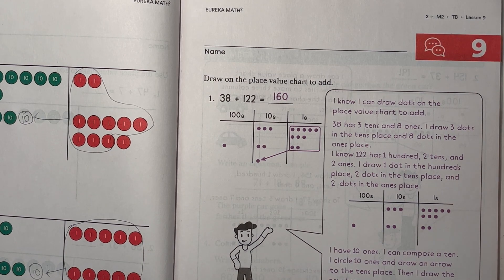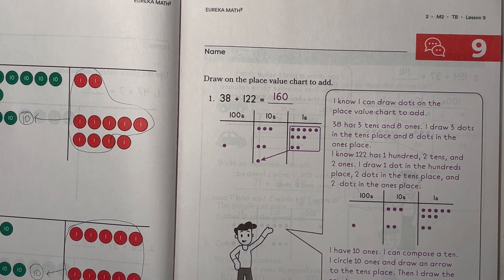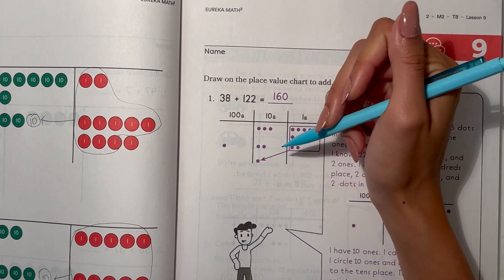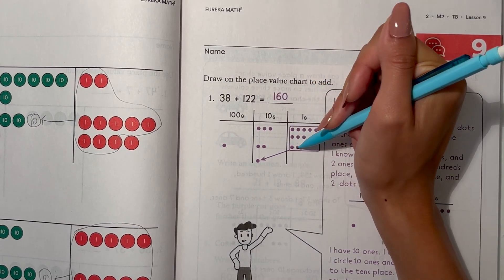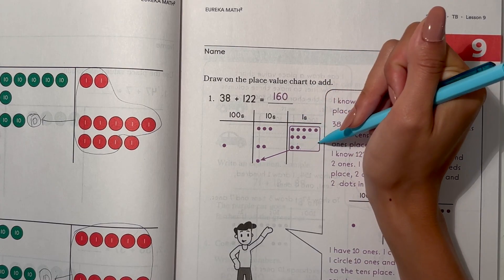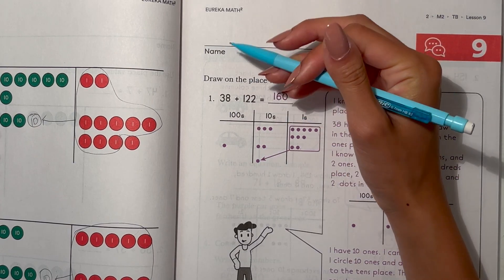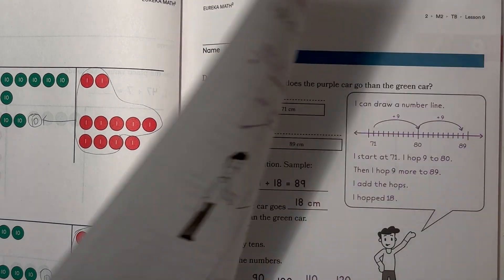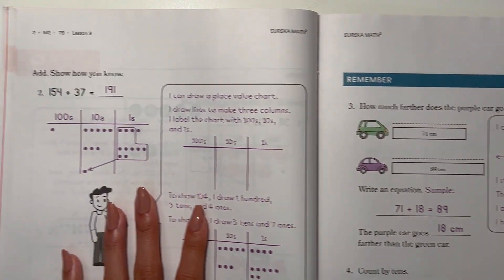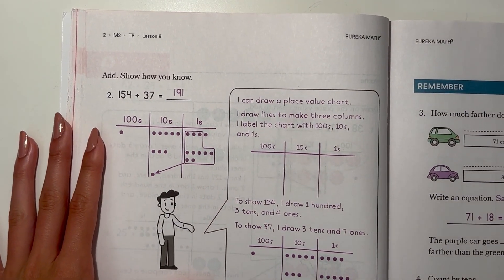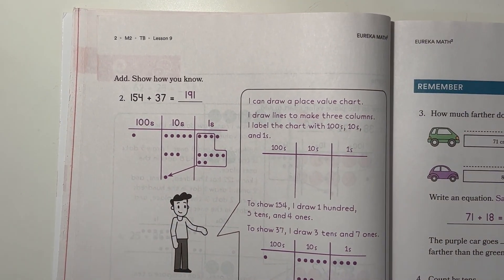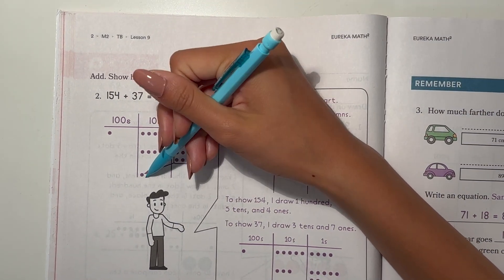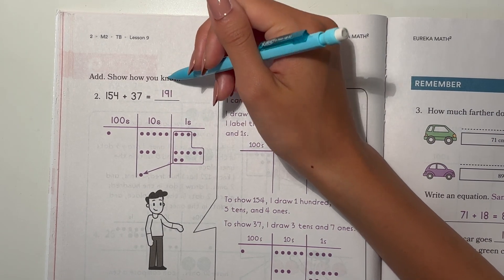Lesson 9. Draw on the place value chart to add. So first draw, 38 plus 122. We regroup the ones to make 1 ten. So now our answer is 160. Add, show how you know. 154 plus 37. Draw on here and regroup the ones to make 10. So 191.